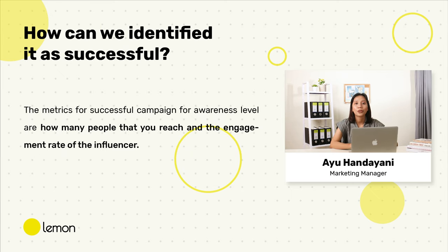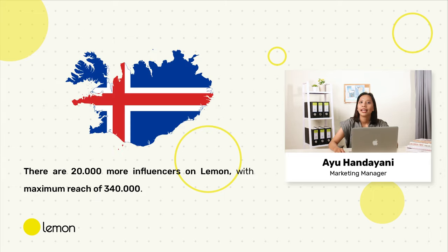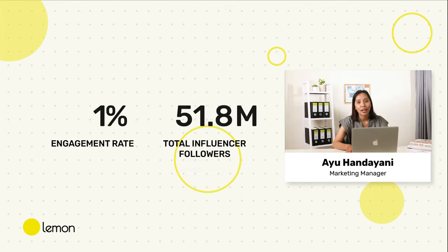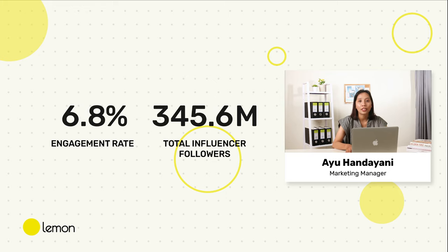How can we call a campaign successful? The metrics for a successful campaign are how many people you reach and the engagement rate of the influencers. In Lemon, there are more than 20,000 influencers with a maximum reach of 340,000. Can you imagine? There are 340,000 people who could see your brand — that's equal to the population of Iceland. Here's the engagement rate and total followers of our Lemon influencers.